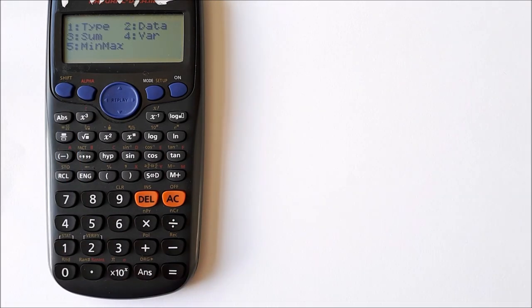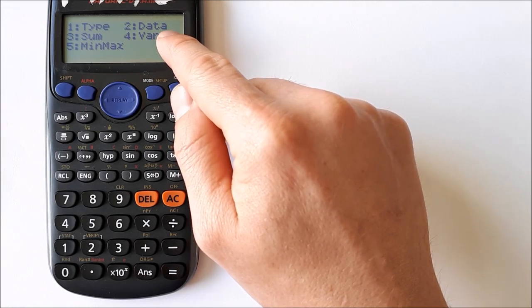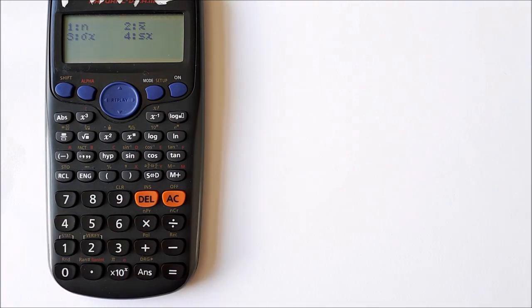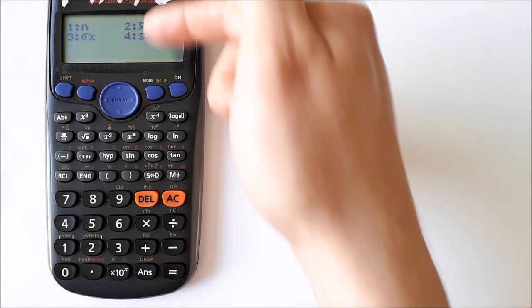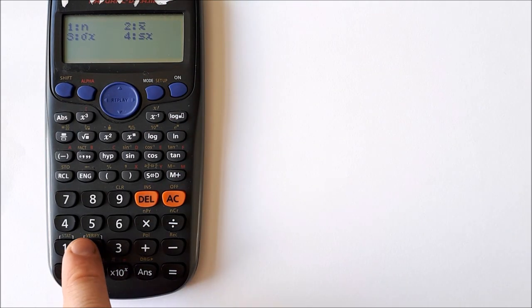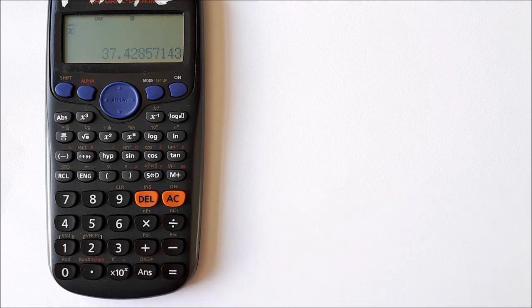Shift one gives you stats and we want to have, we want to go four for variables. So we press four and you get four options up here and number two is the one we want. So X bar, that's the mean, press two equals. So the mean of the numbers that I typed in is 37.42.